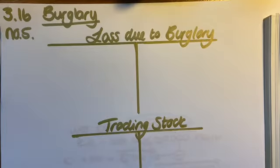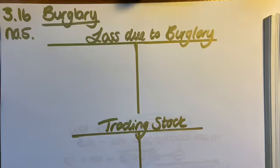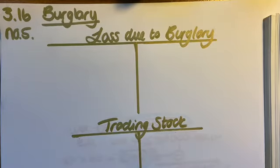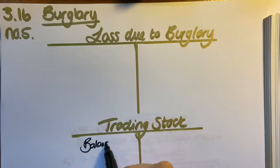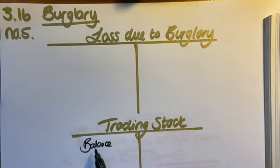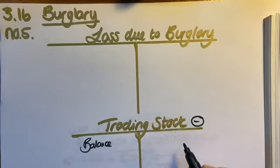Let's take a look at number five — the burglary. This is a nice easy one. The adjustment states we've lost stock of R42,000. If I go to my trading stock account, my balance is on the left, and when there is a loss of stock it goes on the credit side because it's a minus.